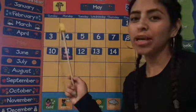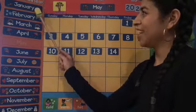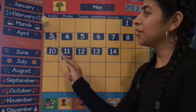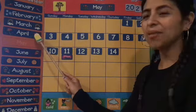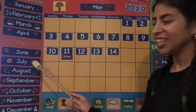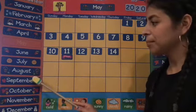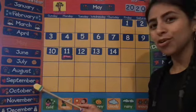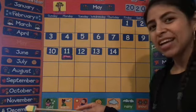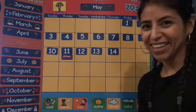Ready? I'm gonna point while we sing. January, February, March and April, May, June, July and August, September, October, November, December. These are the months of the year.